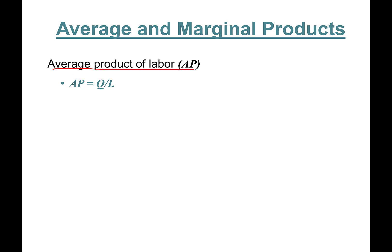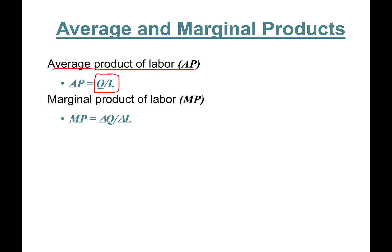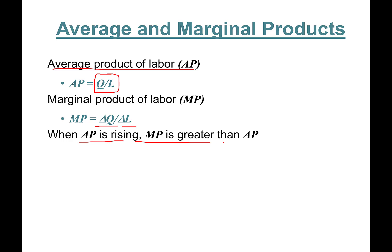Average product of labor (AP) is defined as total quantity produced divided by the number of workers employed. Marginal product of labor is the change in quantity divided by the change in the number of workers. When average product is rising, marginal product is greater than average product.